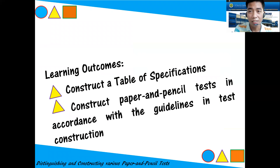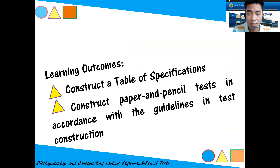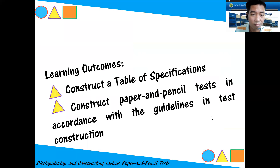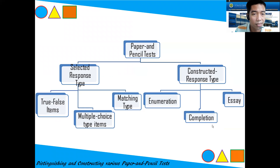So, what are the learning outcomes? What should you learn at the end of this lesson? First, construct a table of specifications. Second, construct paper and pencil tests in accordance with the guidelines in test construction.